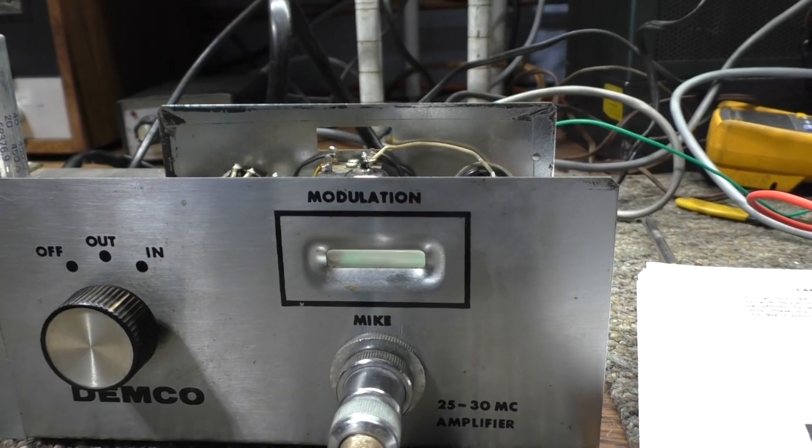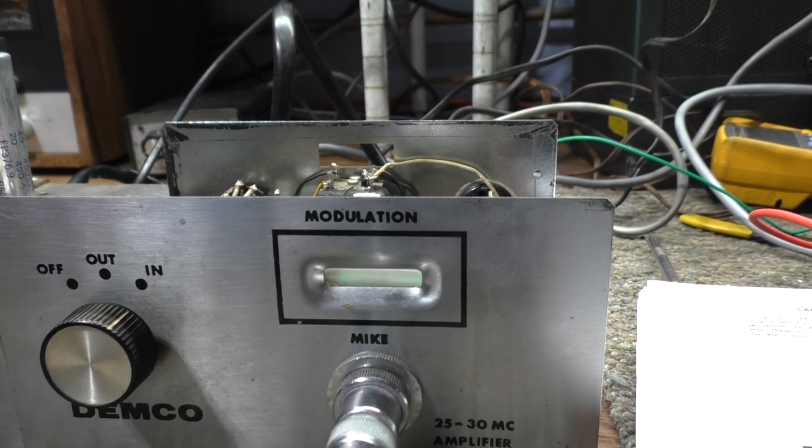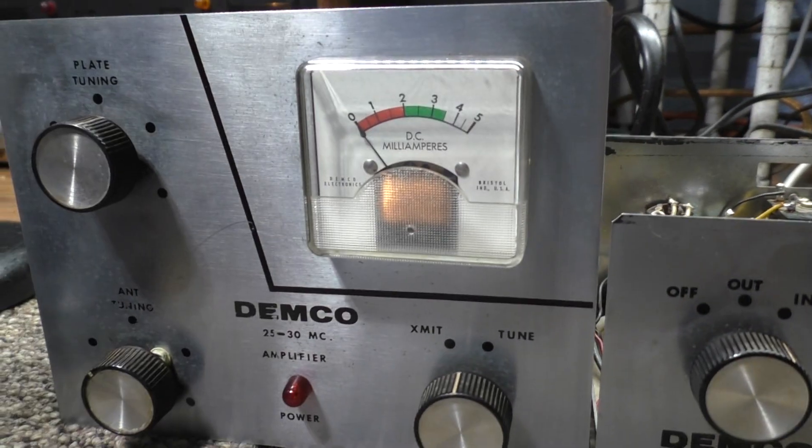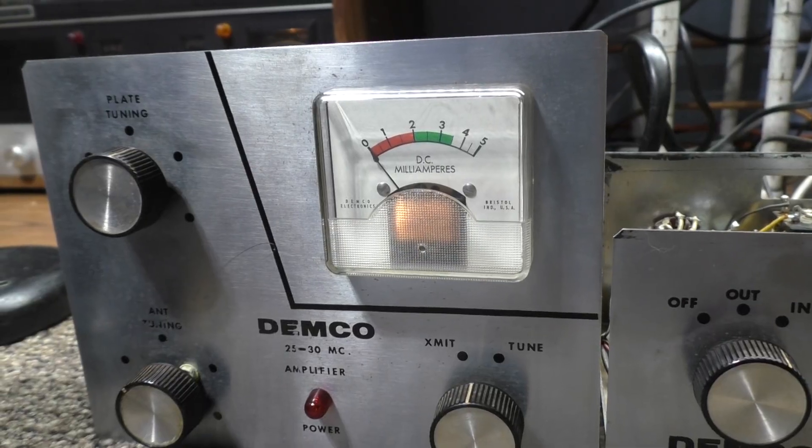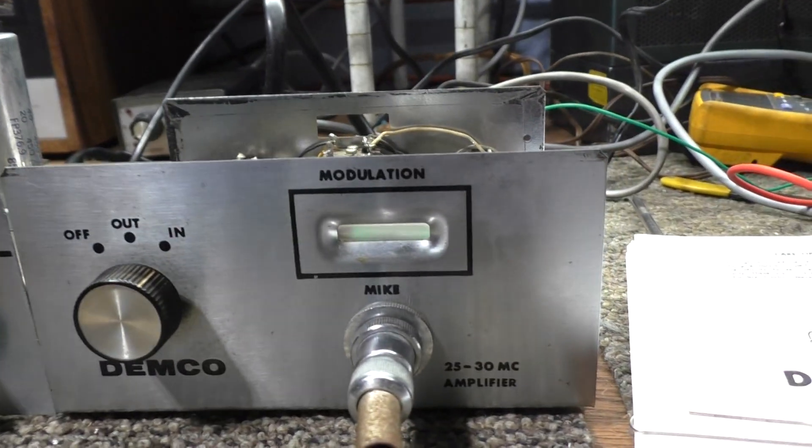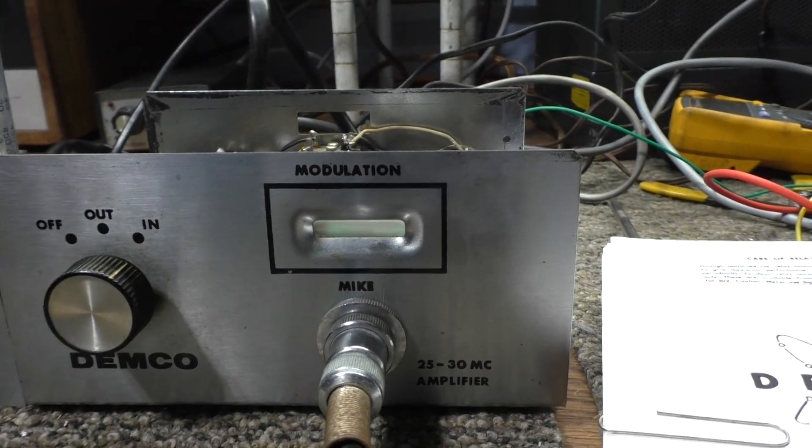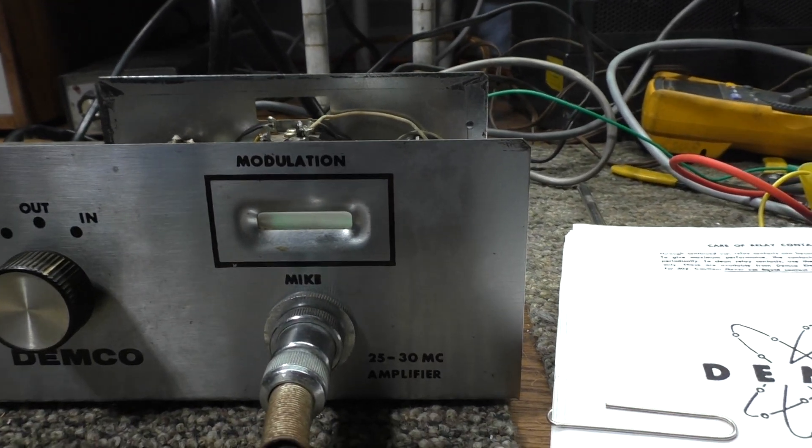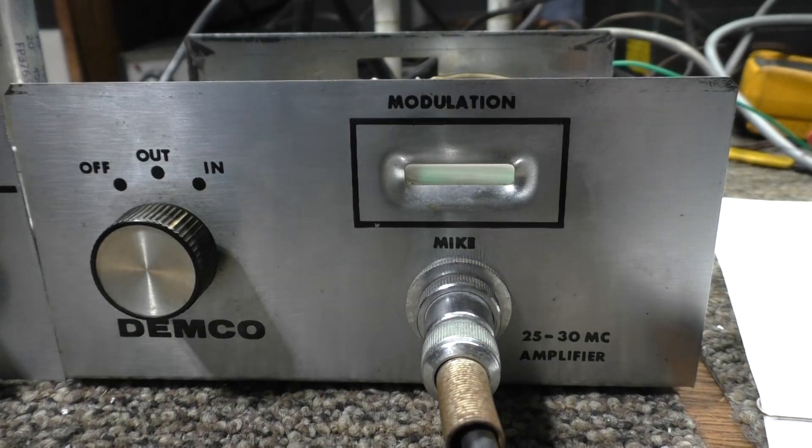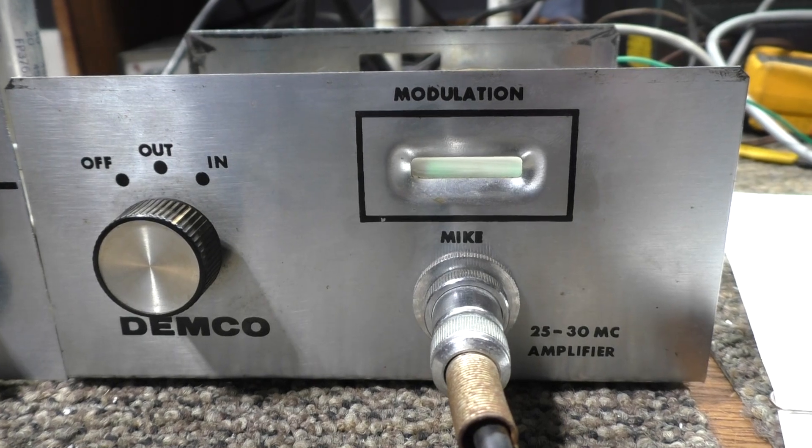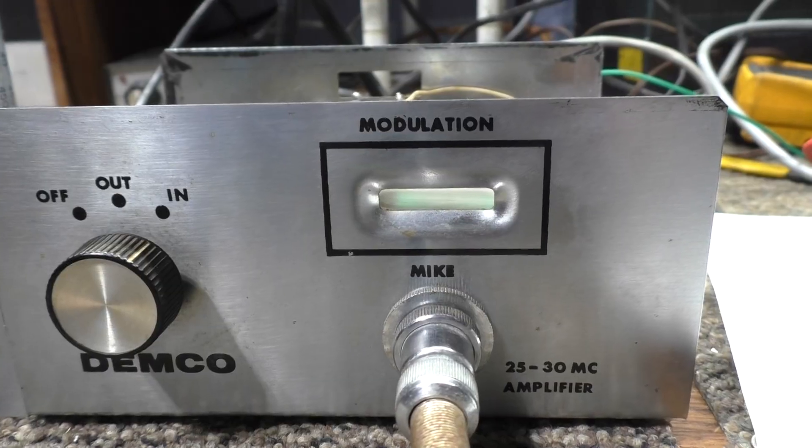However, this DEMCO DMH1 control head is similar to a DEMCO modulator except it actually modulates the screen only of the DEMCO DPA 65 amplifier. So what you do is you key down your radio with no modulation going into your radio, and the modulation actually goes in from your mic, goes into the DEMCO DPA, the DMH1 control head here, and this boosts up the modulation.